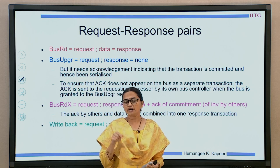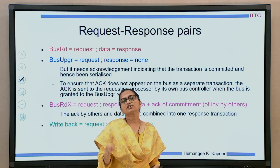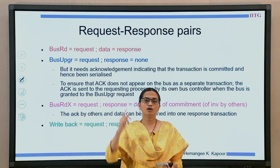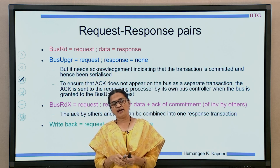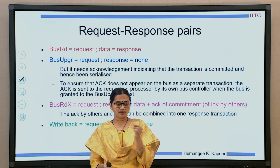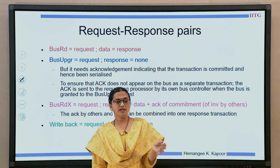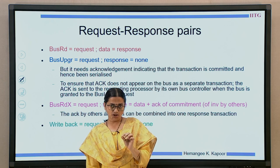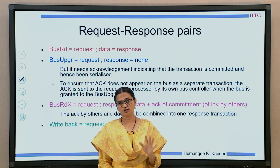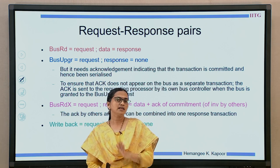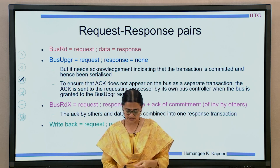What we can do is: whenever a bus upgrade is sent by a controller, that bus controller itself sends back an acknowledgement to the same processor. This way the response is generated, and when the bus is granted for the bus upgrade it also serializes it in bus order. This bus upgrade transaction request will be seen by everybody, and they will commit to invalidating their blocks before the next transaction on the same block.